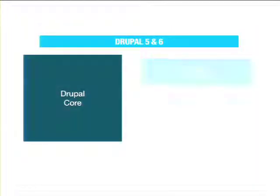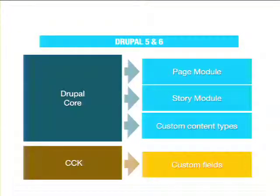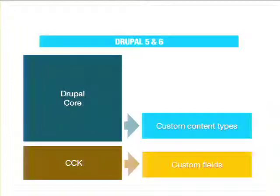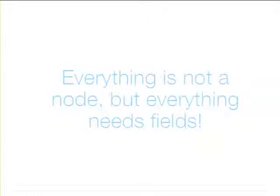In Drupal 5 and 6 we started saying: this Content Construction Kit is pretty useful, we should get some of this stuff into Core. We wanted to get custom fields into Core — we didn't quite make it, but we did get custom content types into Core. Bye-bye page module and story module. Now Core has code to create custom content types, providing two out of the box: the page content type and the story content type. CCK was still the place for custom fields — we didn't get that into Core for Drupal 5 or Drupal 6.